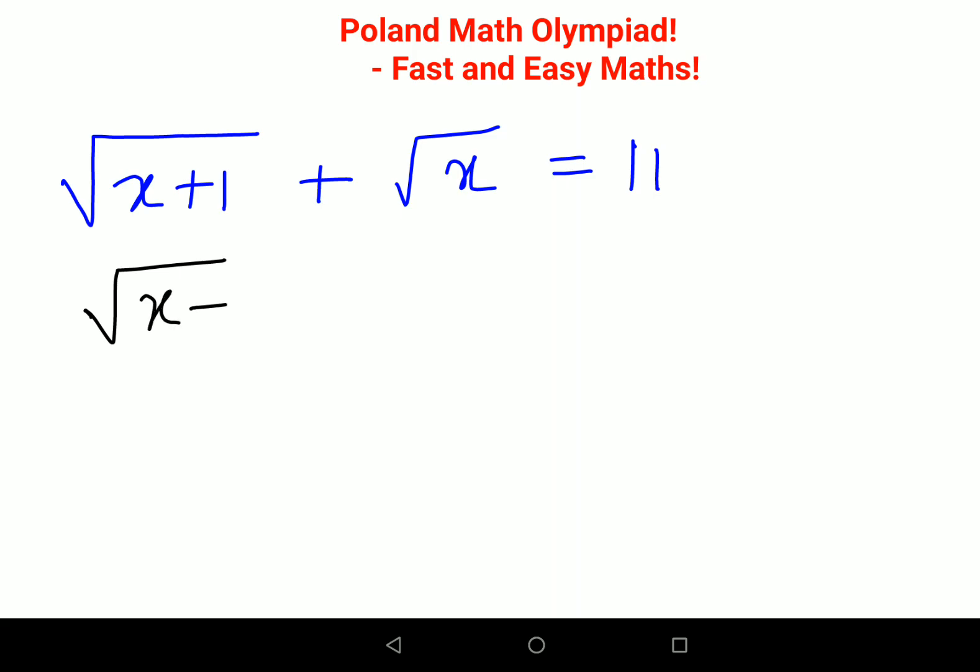Let's keep one root on one side and shift the root x to the other side. So we have square root of x plus 1 equals 11 minus square root of x.